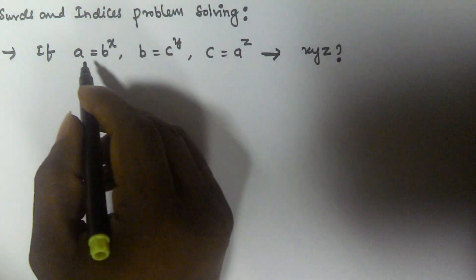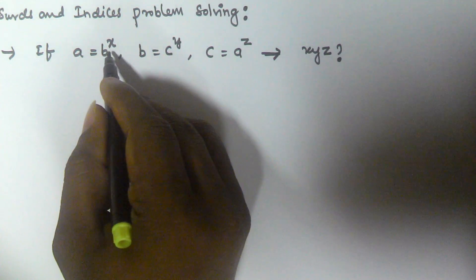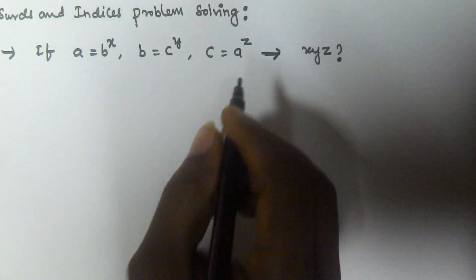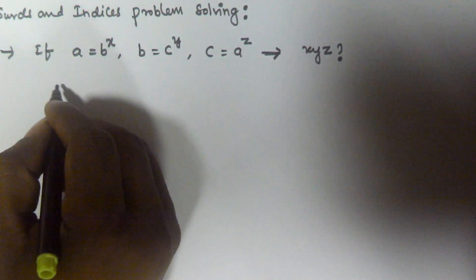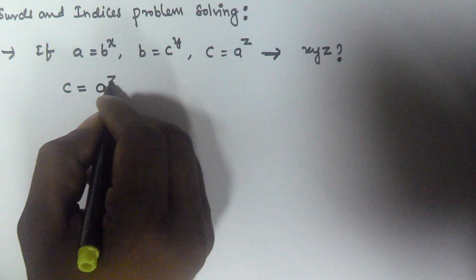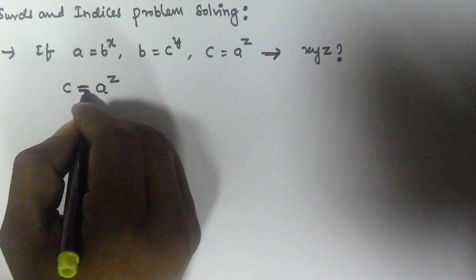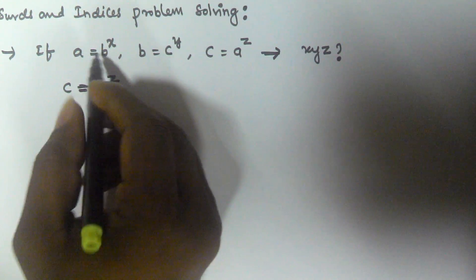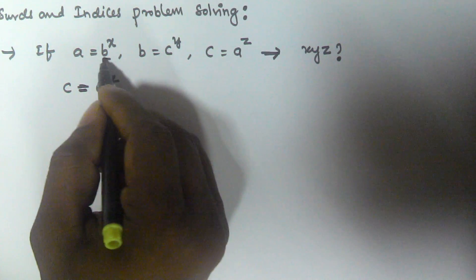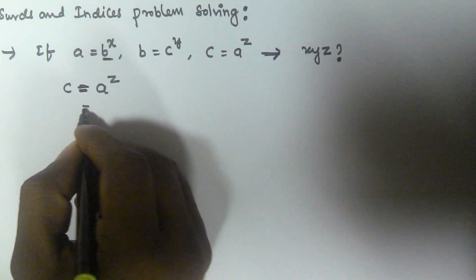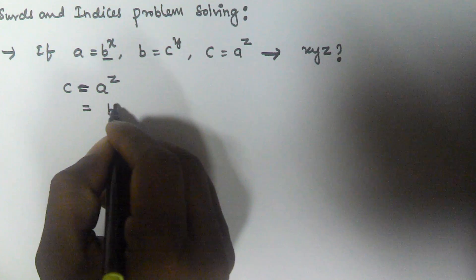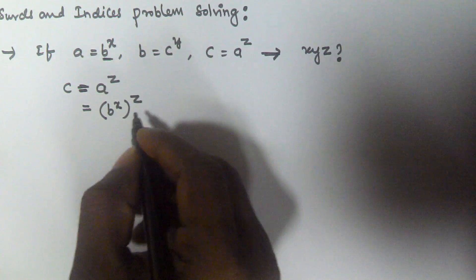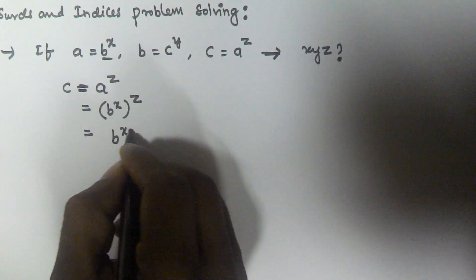From the given conditions: a equals b to the power of x, b equals c to the power of y, and c equals a to the power of z. I will take c equals a to the power of z and substitute a equals b to the power of x into it, giving c equals b to the power of x, raised to the power of z, which can be written as b to the power of xz.